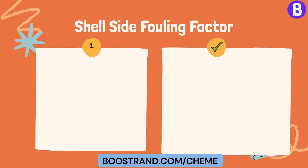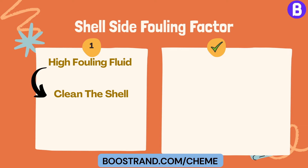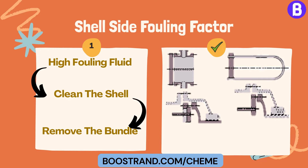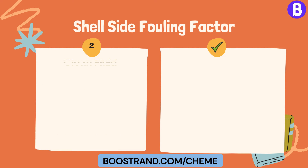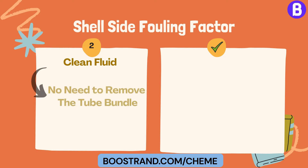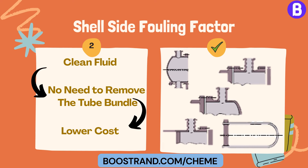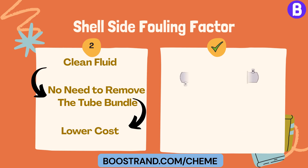If the shell side is serving a high fouling fluid, we will need to clean the shell, so the bundle should be removable. In this case, we should choose Type A for the front head and Type S, T, or U for the rear head. For a normal shell, the exchanger type shall be AES, AET, or AEU. If the fluid in the shell side is clean, we don't need to remove the tube bundle to clean the tubes from outside, resulting in smaller dimensions and lower cost. So we can use Type B for the front head and L, M, N, or U for the rear head — giving Temer types BEM, BEN, BEL, or BEU.